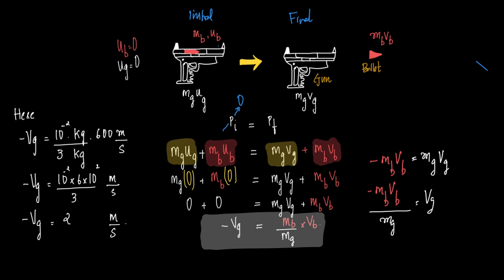This −Vg is what we call the recoil velocity of the gun. Now substituting values: Mb = 10⁻² kg, Mg = 3 kg, and Vb = 600 m/s. So −Vg = (10⁻² / 3) × 600.